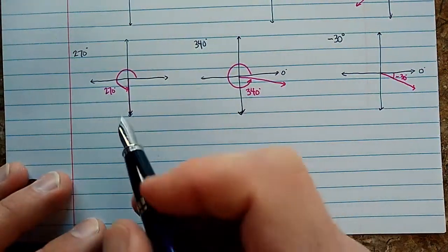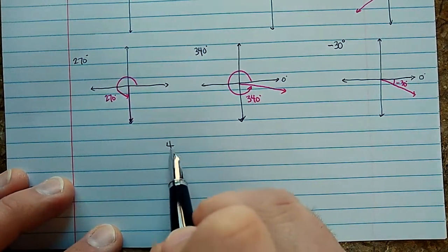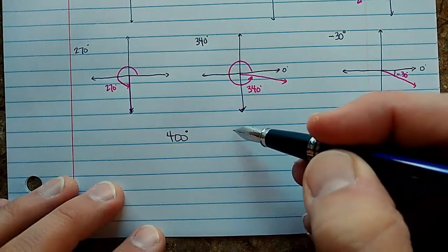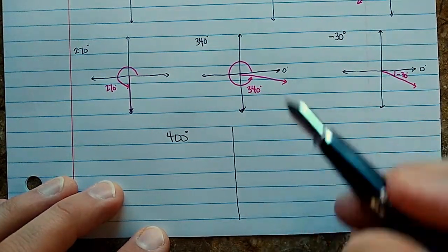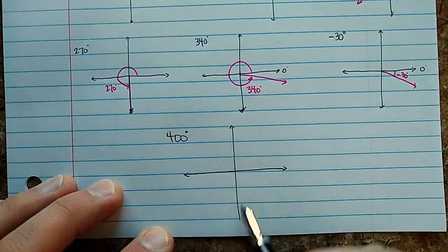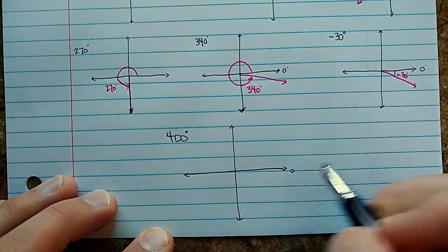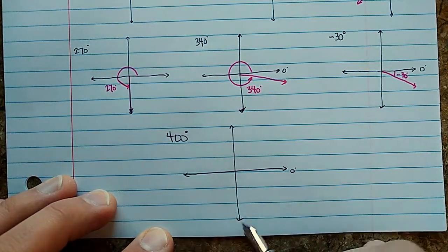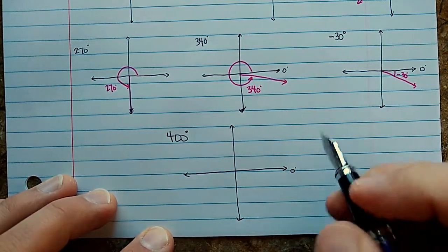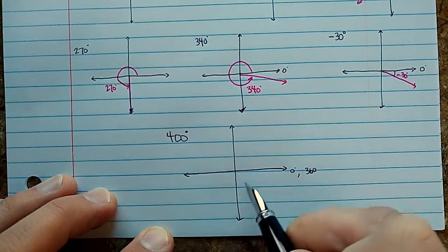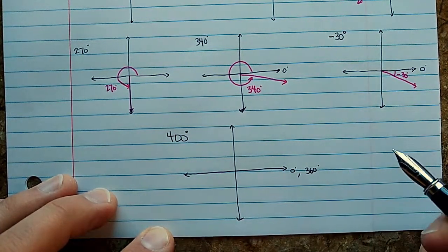Okay, one more. How about 400 degrees? I said we were going to work with larger angles and that one's pretty big. This is zero, 90, 180, 270. This is also 360 degrees. So if you did a full circle and came back to the beginning, that would be 360.